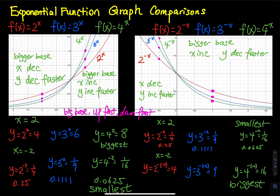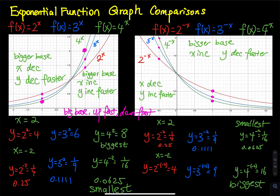When x is equal to 0.5, the 4 to the x has the largest y value. For a bigger base, when x goes up, y goes up much faster. When x is negative — say x equals negative 1 — the green curve has the lowest y value. That's what I mean by bigger base: up fast, down fast. When x goes up, y goes up faster; when x goes down, y goes down faster.